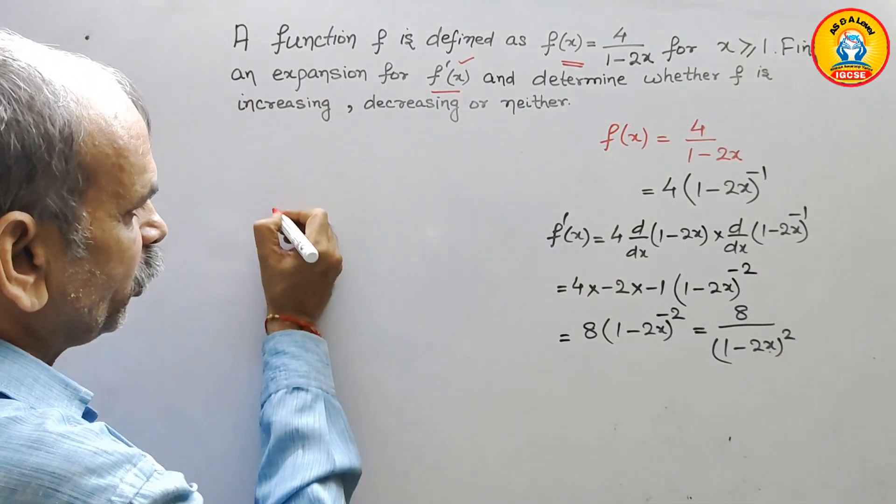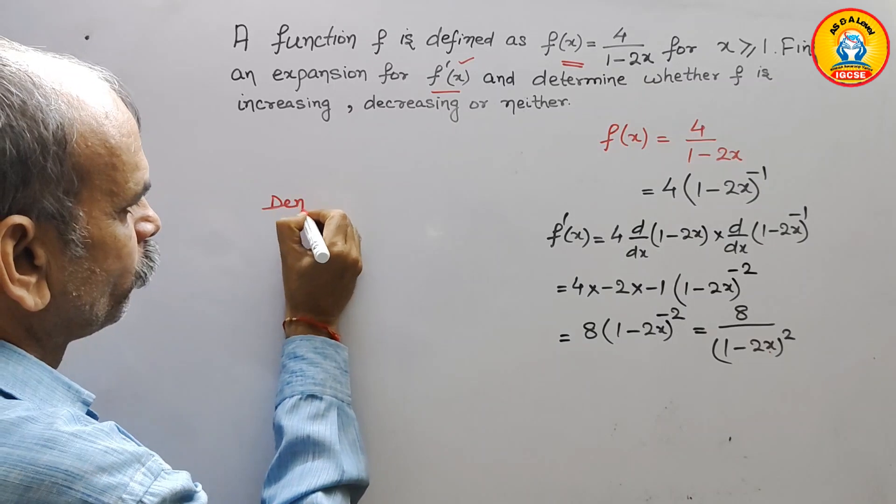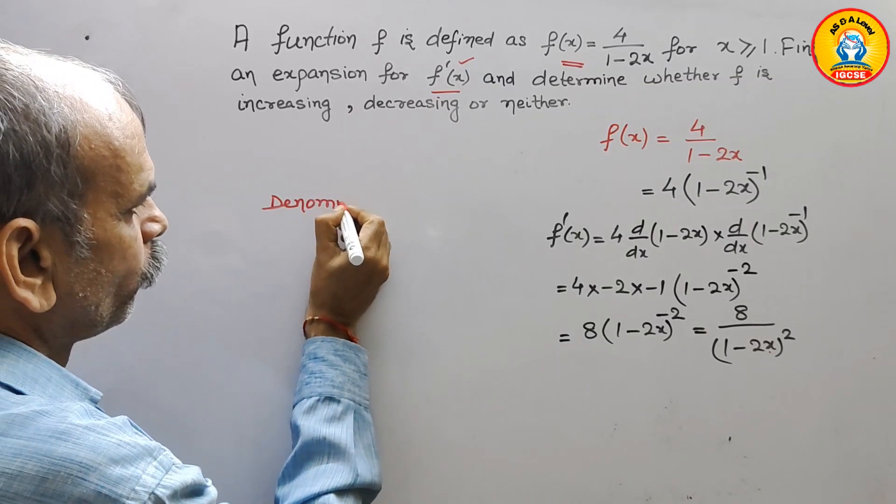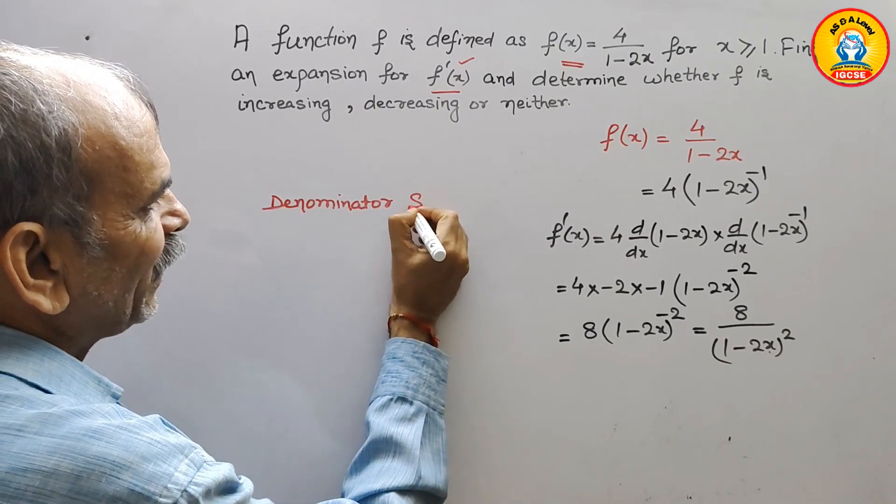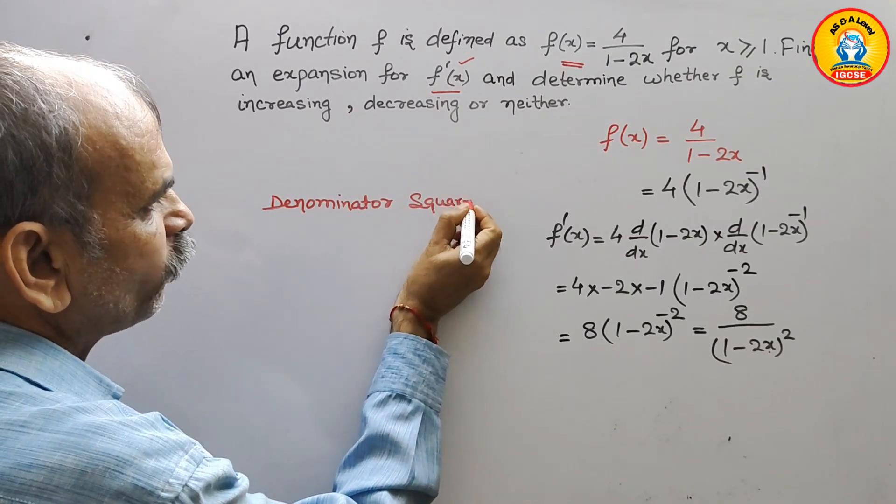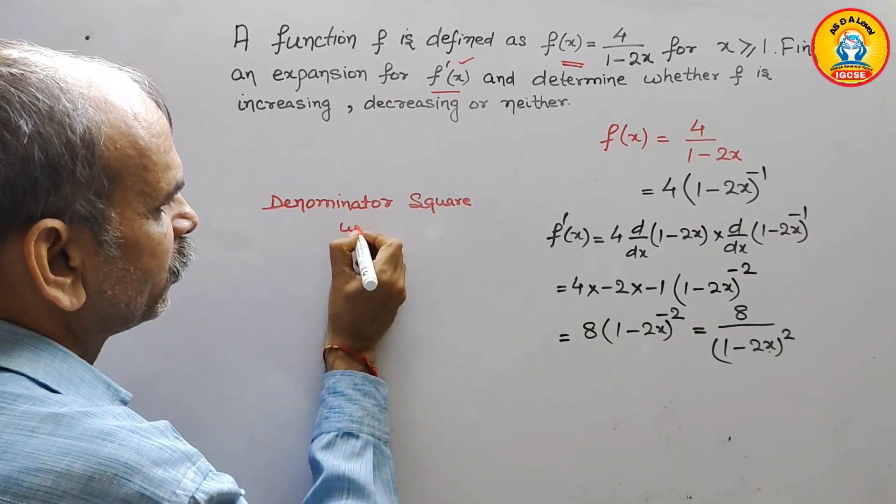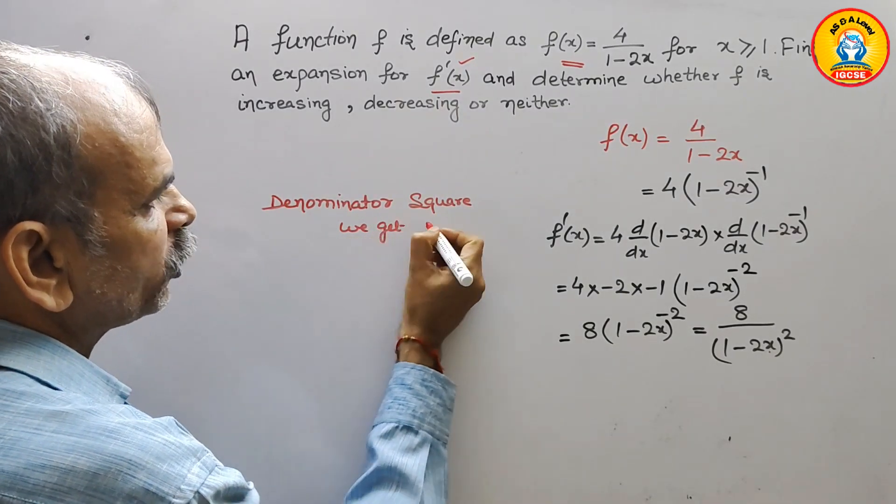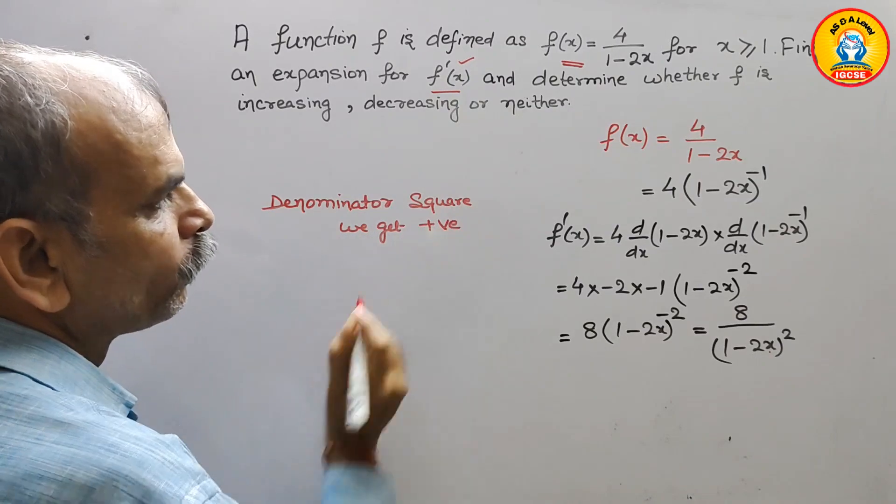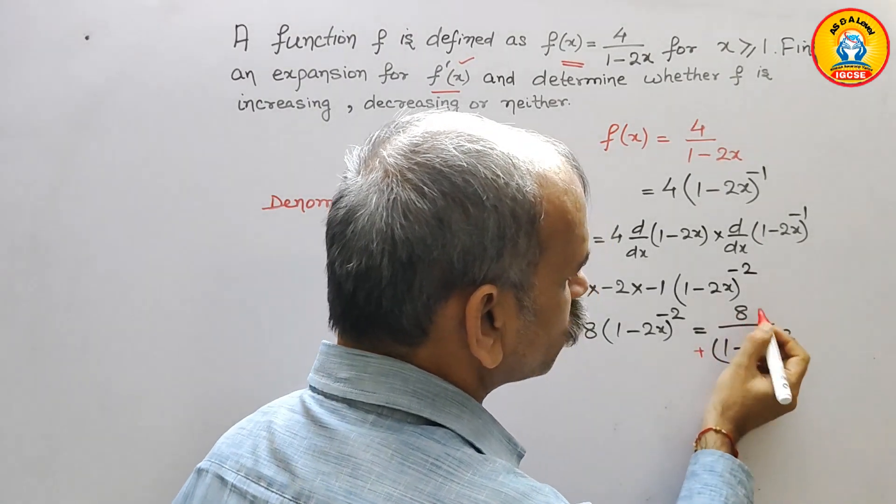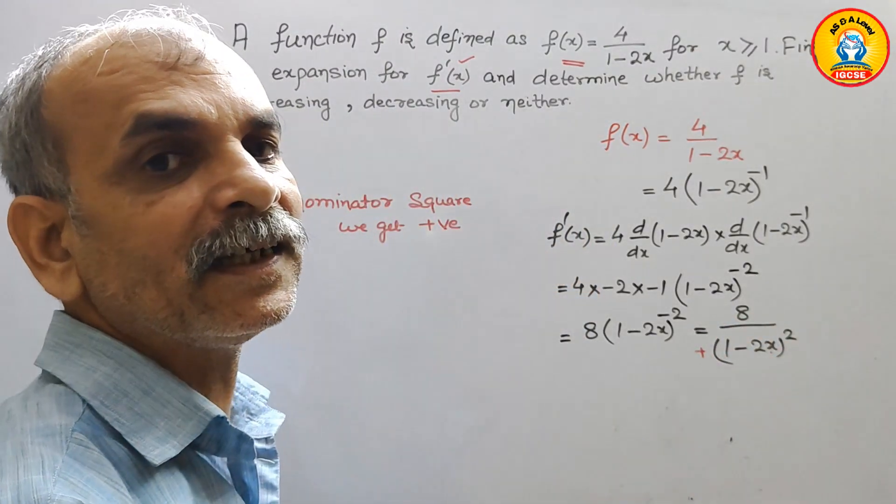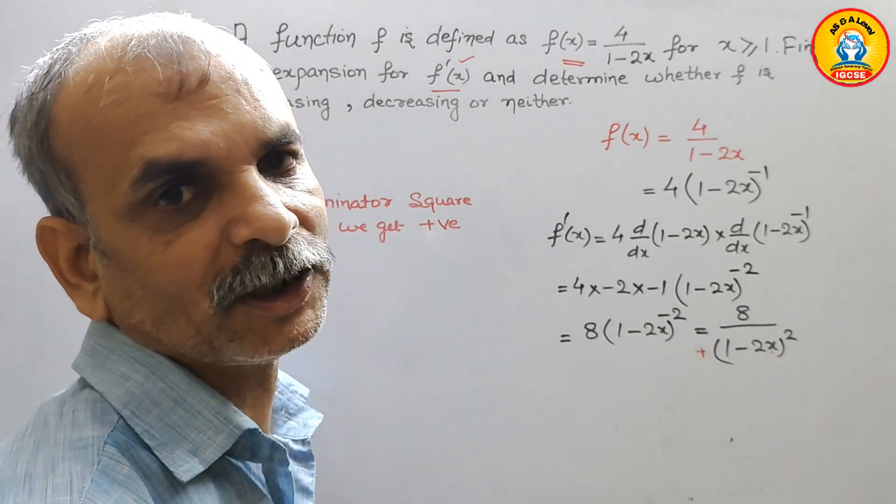So now we can say in denominator, square is there. So therefore we will get positive only. So if this is positive and this is also positive, we will get increasing function.